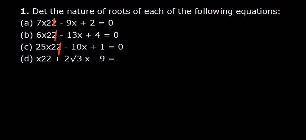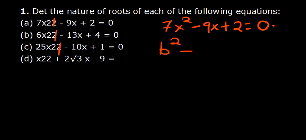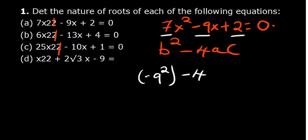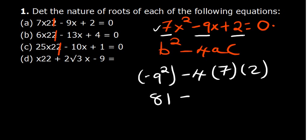For the first question, we have 7x squared minus 9x plus 2 equals 0. The discriminant determines the nature of the roots. Here a is 7, b is negative 9, and c is 2. So the discriminant is b squared minus 4ac — that is negative 9 squared, minus 4 times 7 times 2.